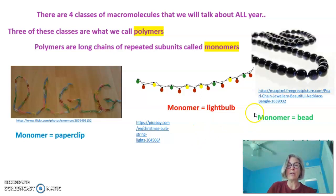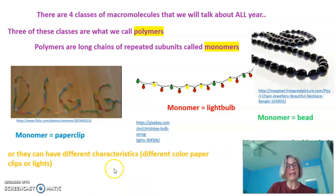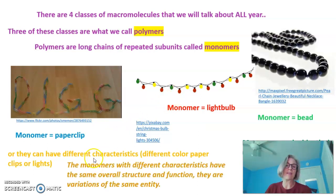Monomers can be identical, like these black beads, or they can have slightly different characteristics, like the different colored paperclips or the different colored lights. Even if they have slightly different characteristics, they have the same overall structure and function.